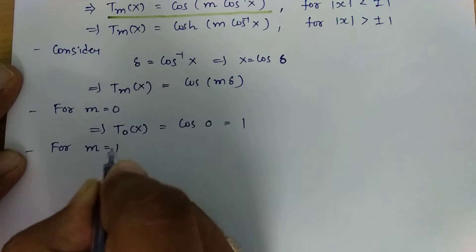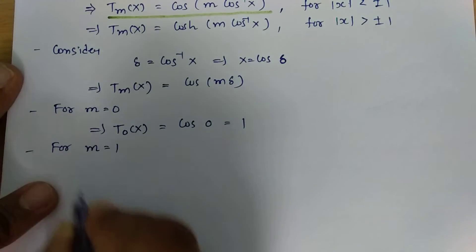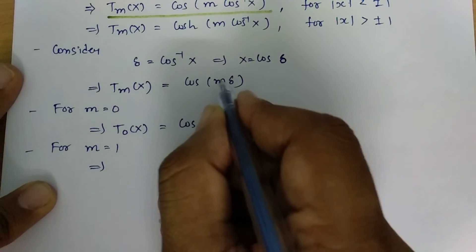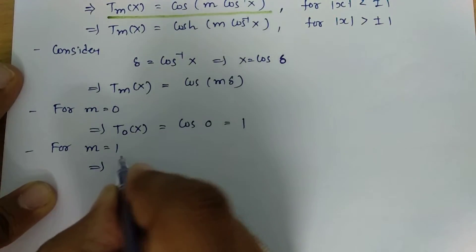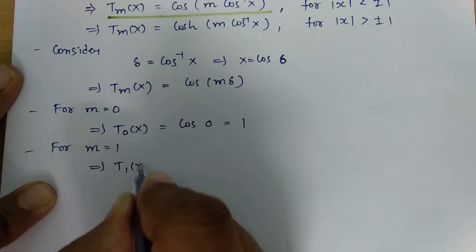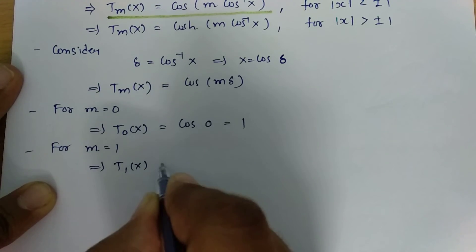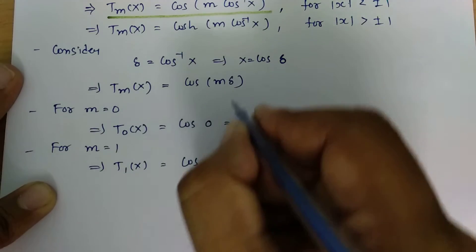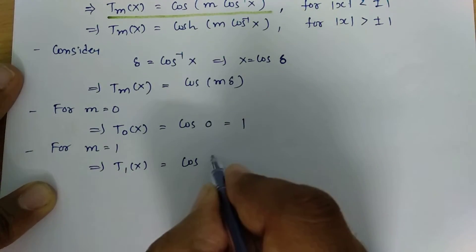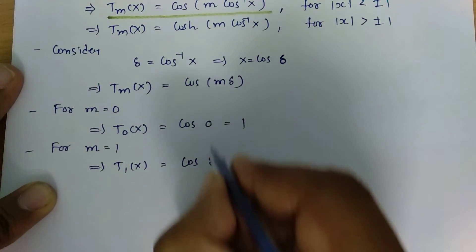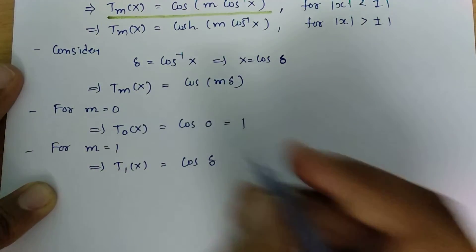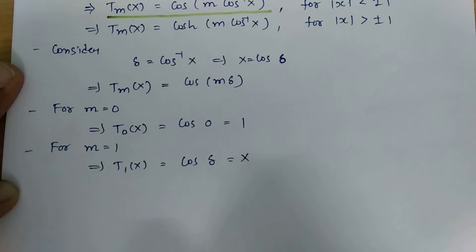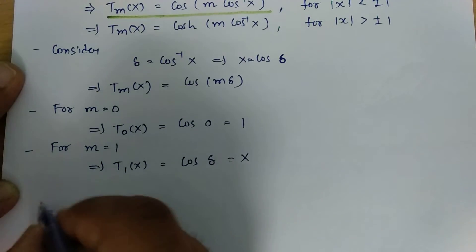For m equals 1, T1 of x equals cos of delta, and cos of delta equals x, so T1 of x equals x.